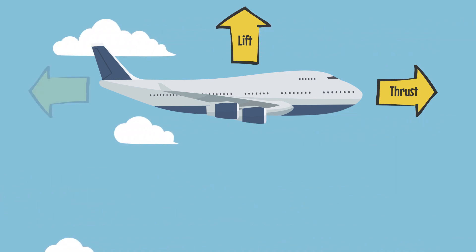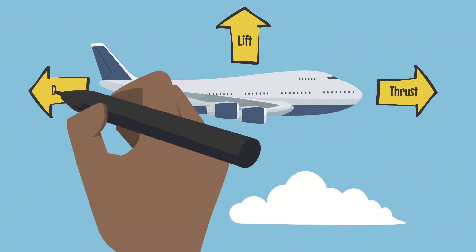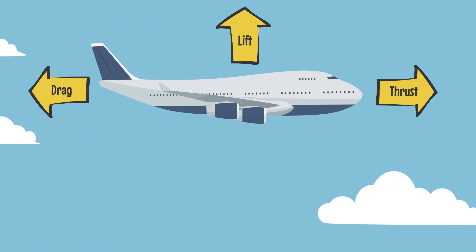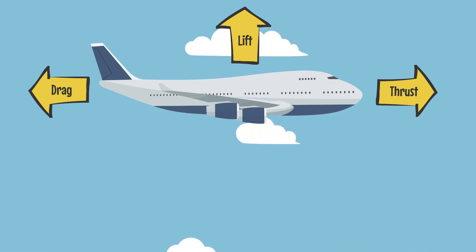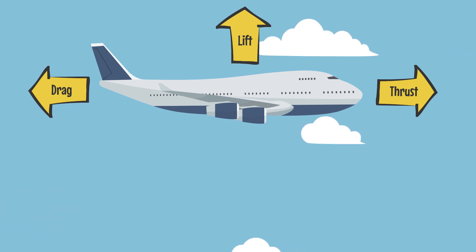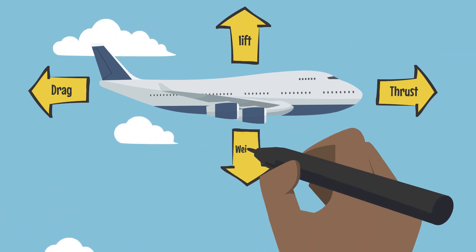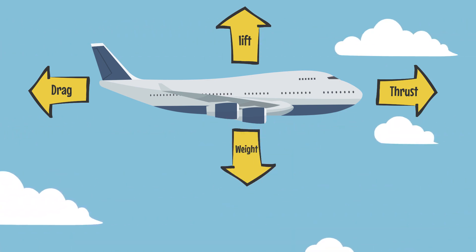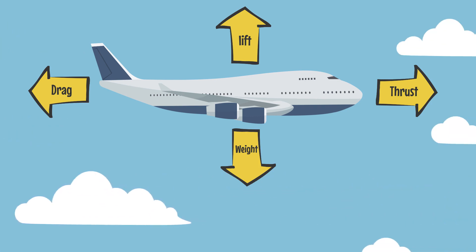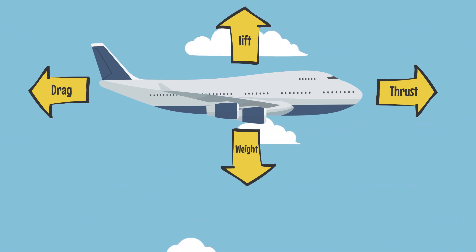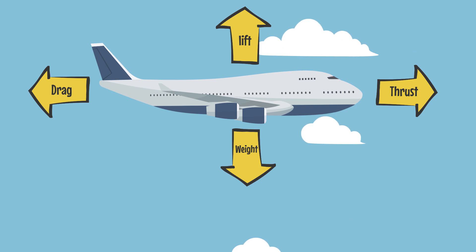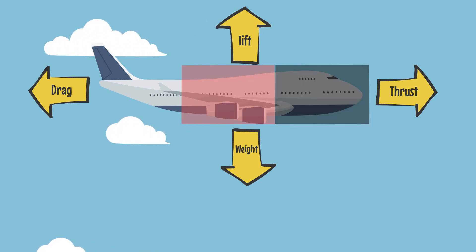Drag is the force that slows the plane down. For a plane to stay in flight, it needs stronger lift and thrust than drag. Weight is caused by gravity — it forces the plane downwards. The plane is designed to distribute weight evenly, rather than being heavier at the front, middle, or rear.